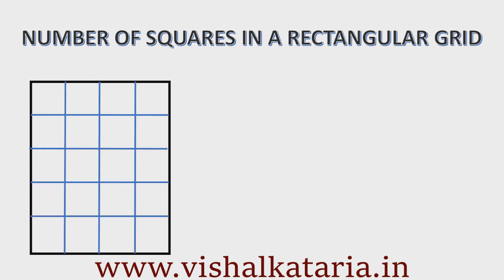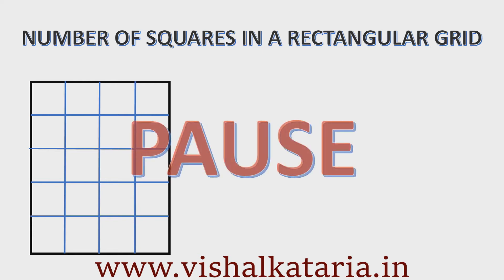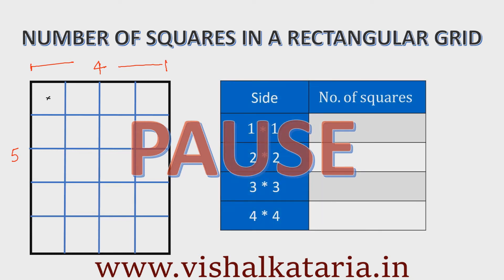Now one more example. I want you to pause this video and take the observations quickly. The smallest square will be 1 unit by 1 unit and the biggest will be 4 units by 4 units, because this rectangle has a smaller side of 4 units and a longer side of 5 units. So the biggest square will be 4 by 4 and smallest will be 1 by 1. Please check your observations against what follows.